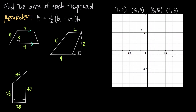The bases are always going to be the parallel sides, not the non-parallel sides. So you're looking for the parallel sides — those will be the bases. You want to add their lengths together, multiply by the height, which is the distance between the parallel sides, and then divide by two, or multiply by one-half — same thing.